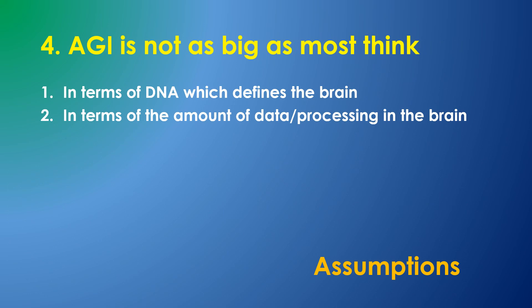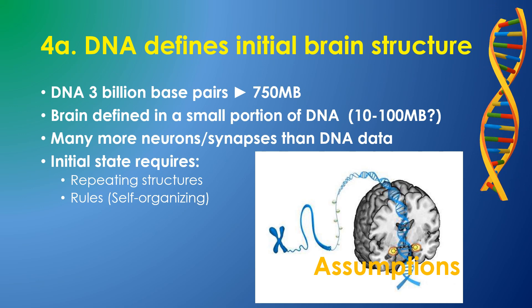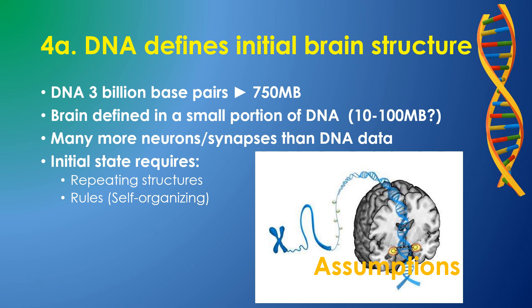Assumption 4: I assume that AGI and true intelligence are not as complex as most people think. I would like to bound this complexity in two ways. First, your complete DNA with its 3 billion base pairs represents only 750 megabytes of information, and only a small fraction of our genome defines the structure of our brain, much less for our neocortex. So it is conceivable that our intelligent structure can be defined by only ten to a hundred megabytes of information. Since there are many more neurons and synapses than DNA defining their structure, the brain and intelligence must be defined with repeating patterns or rules expressible in a relatively small body of information — much less than the body of AI software already written.